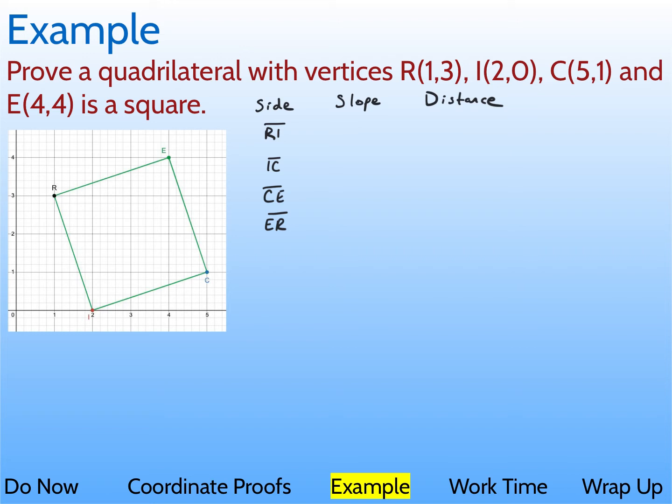So let's start with the slope. So for RI, you go down 3 over 1, which gives a slope of negative 3. For IC, over 3, up 1, so with that, slope of 1 third.